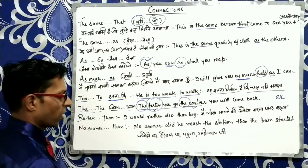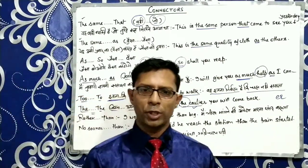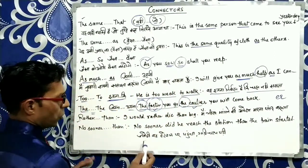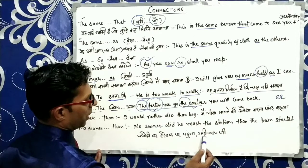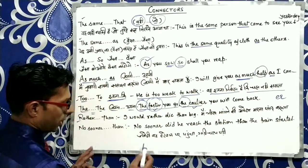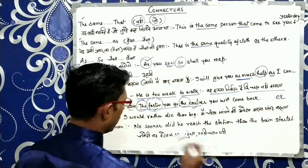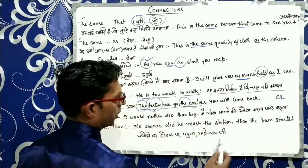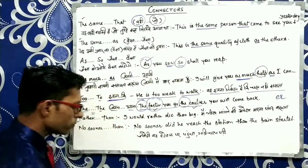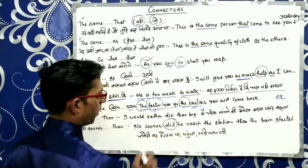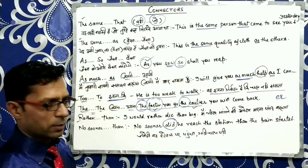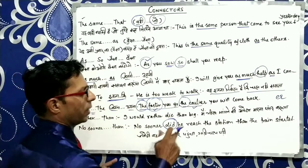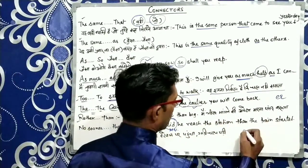اگلا connector ہے No Sooner Than — اس کا مطلب ہے جیوں ہی اور تیوں ہی. مثال: جیسے ہی وہ station پر پہنچا، گاڑی چل پڑی. No sooner did he reach the station than the train started. یاد رہے کہ No Sooner کے بعد جس بھی tense میں sentence بنا رہے ہیں اس کی helping verb کا آنا ضروری ہے.